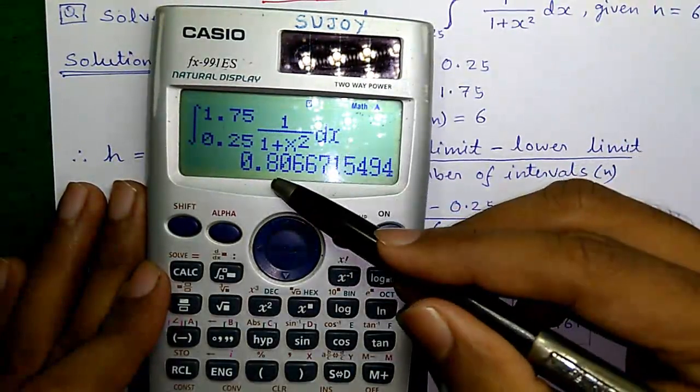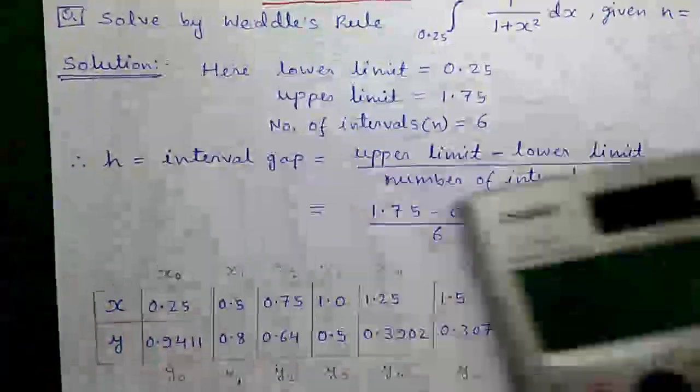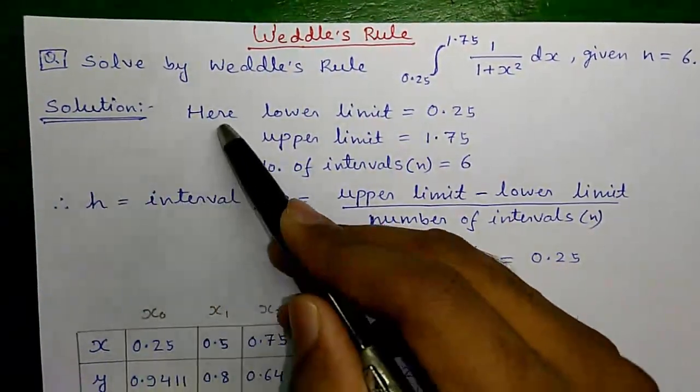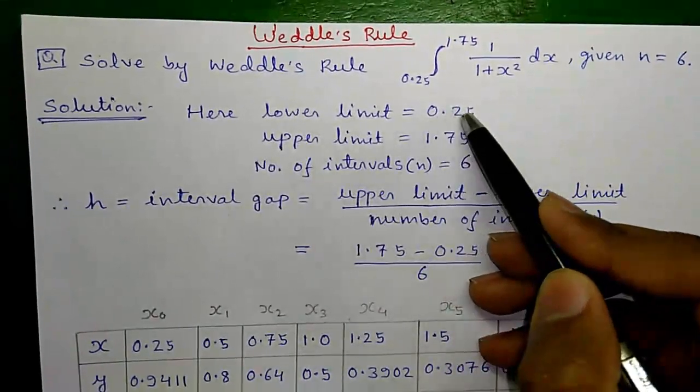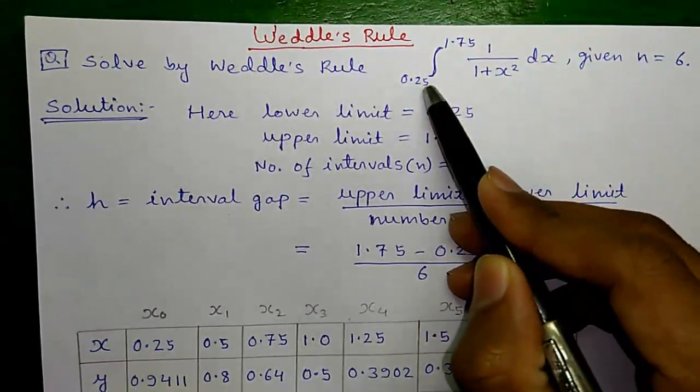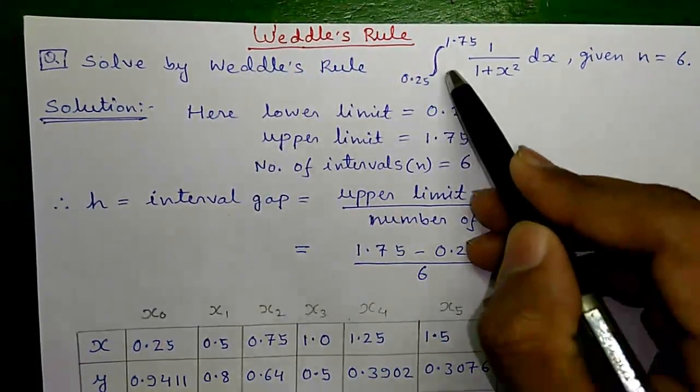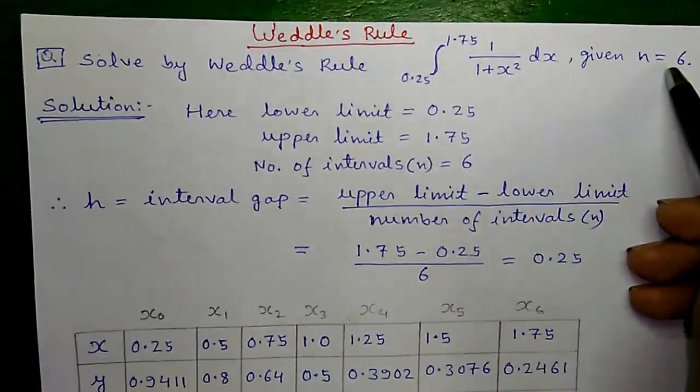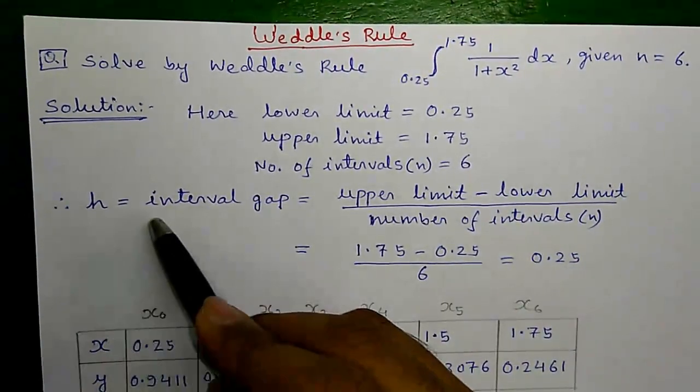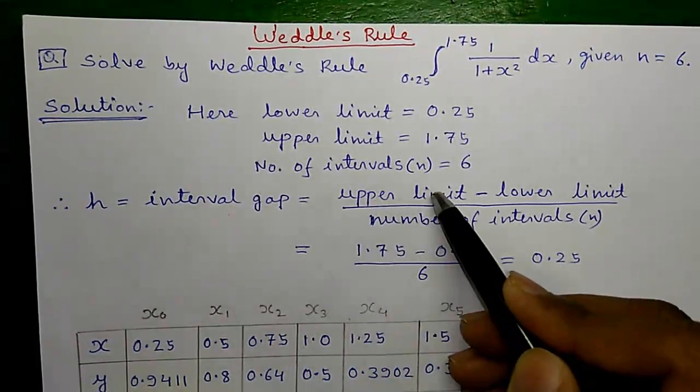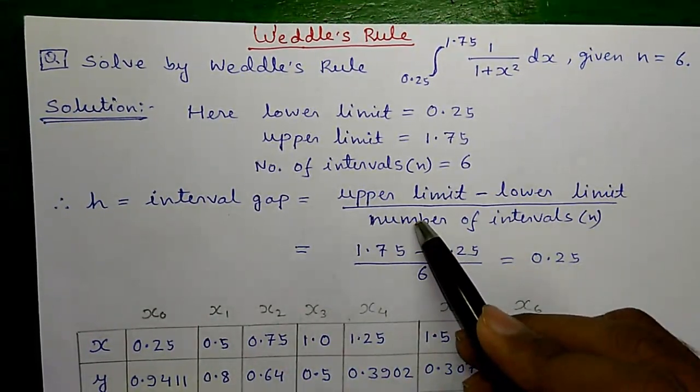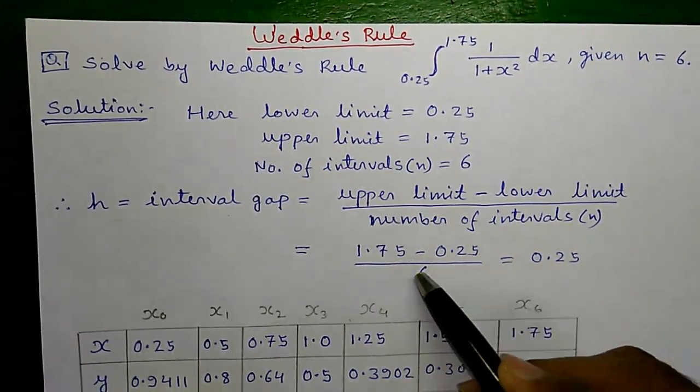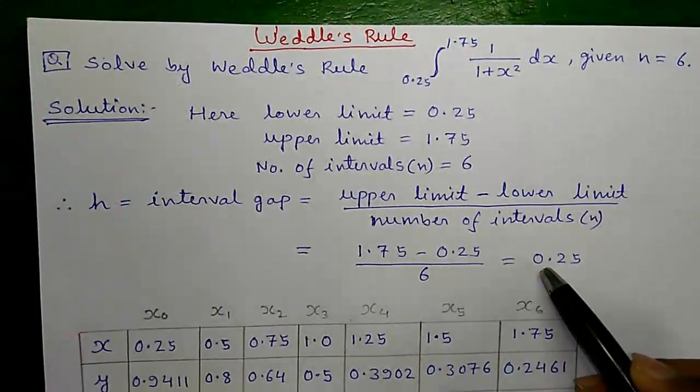Now I will show you how to find out this answer using Weddle's rule. So let's proceed to the solution. Here, the lower limit is equal to 0.25 and upper limit is 1.75 and number of intervals or n equals to 6 given in the question. So, h or interval gap will be upper limit minus lower limit divided by the number of intervals which is 1.75 minus 0.25 divided by 6 which is 0.25.